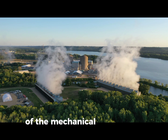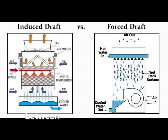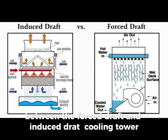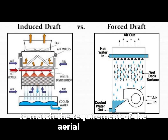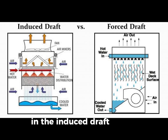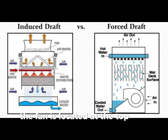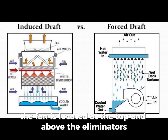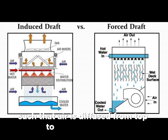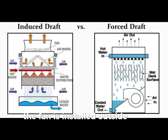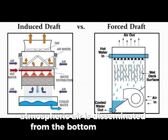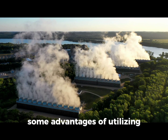The difference between an induced draft cooling tower and a force draft tower is the position of the fan. In the induced draft tower, the fan is located at the top and above the eliminators such that air is drawn from top to bottom. However, in the force draft tower, the fan is installed outside the tower and at the base, so atmospheric air is distributed from the bottom to the top.